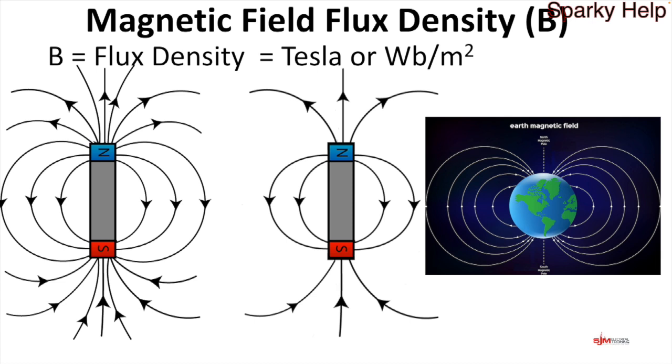If you could condense the Earth down to the size of a tennis ball, then the flux density would be incredibly high. Flux density is what we're after.